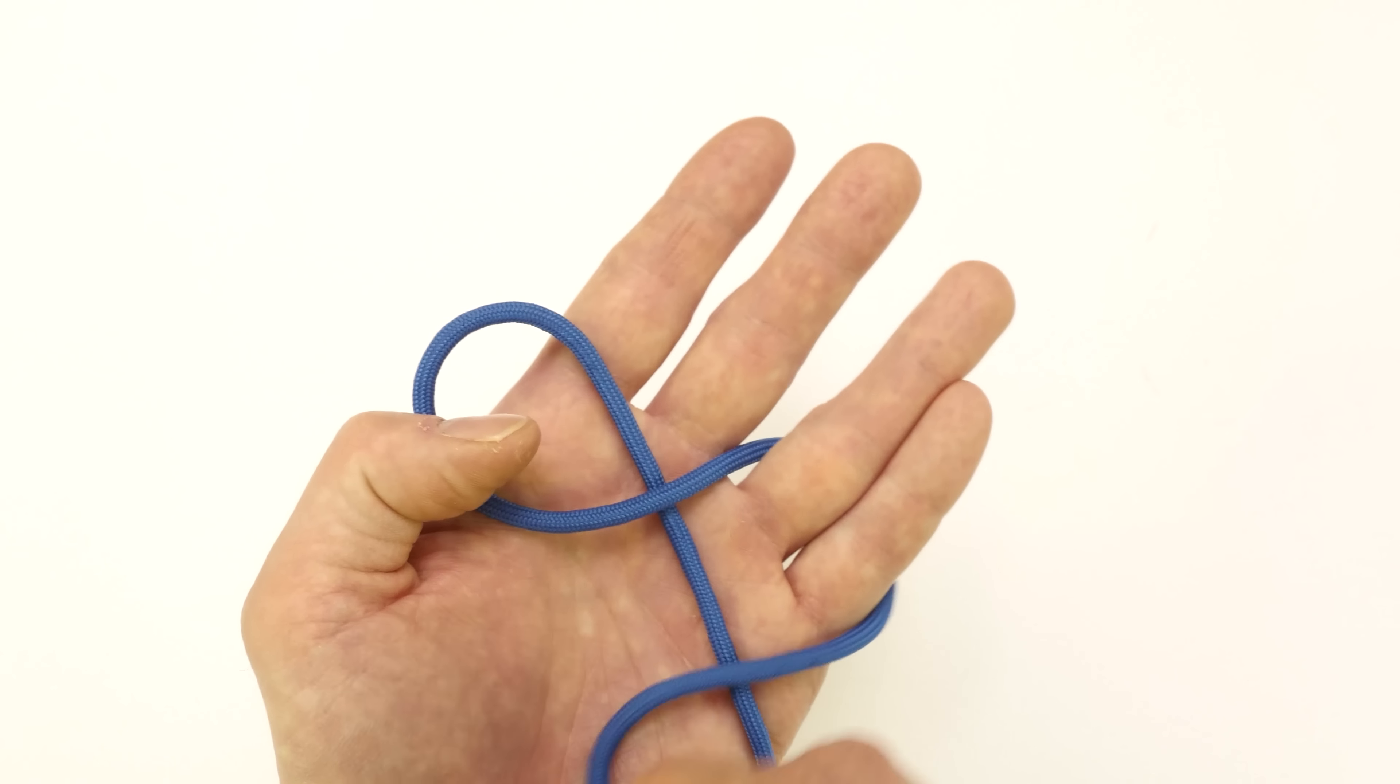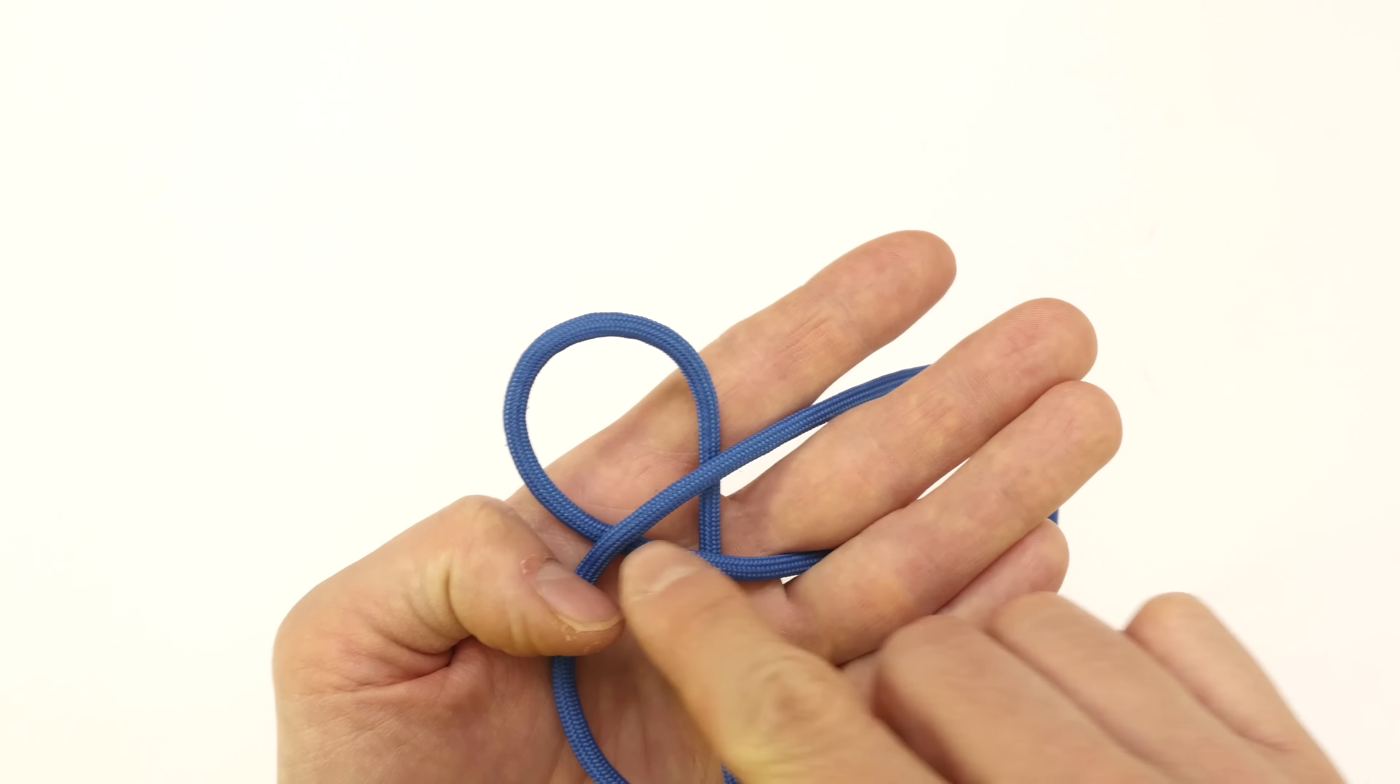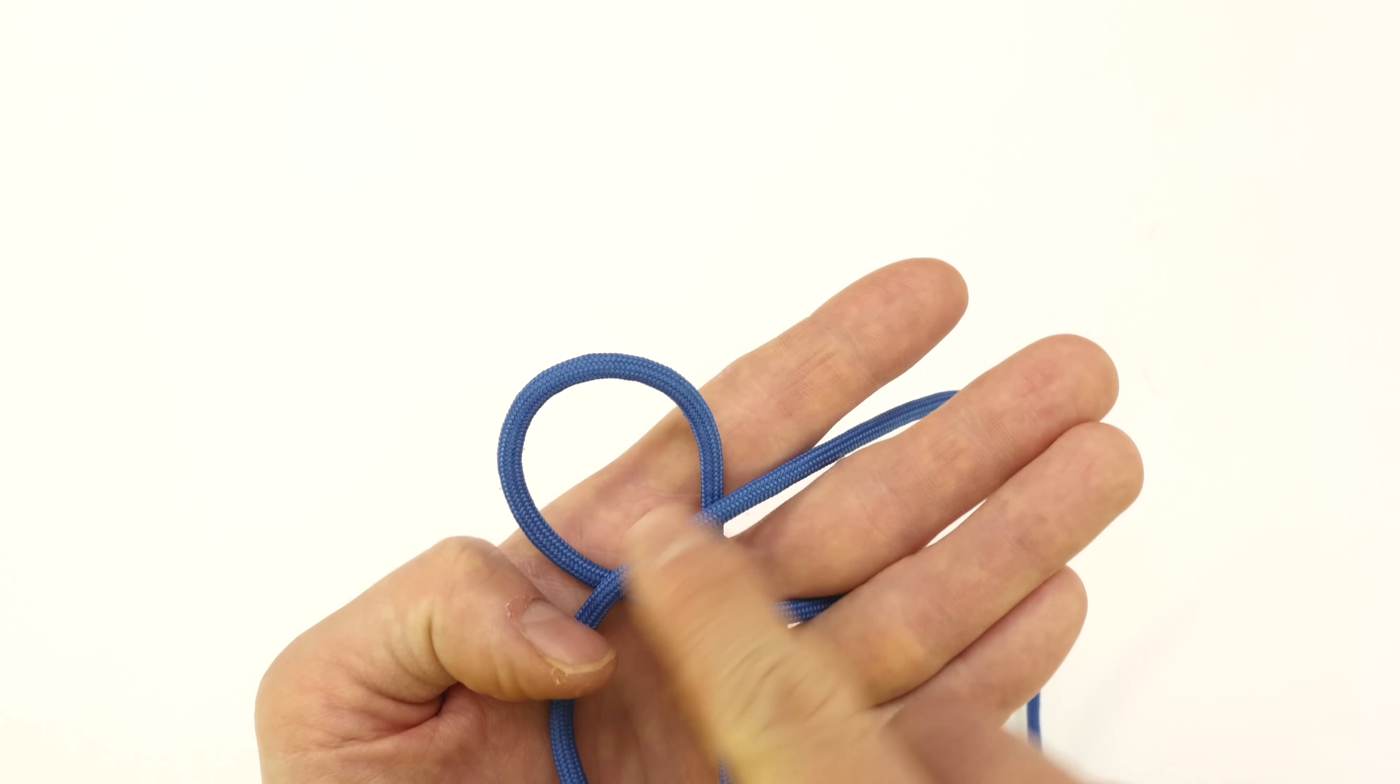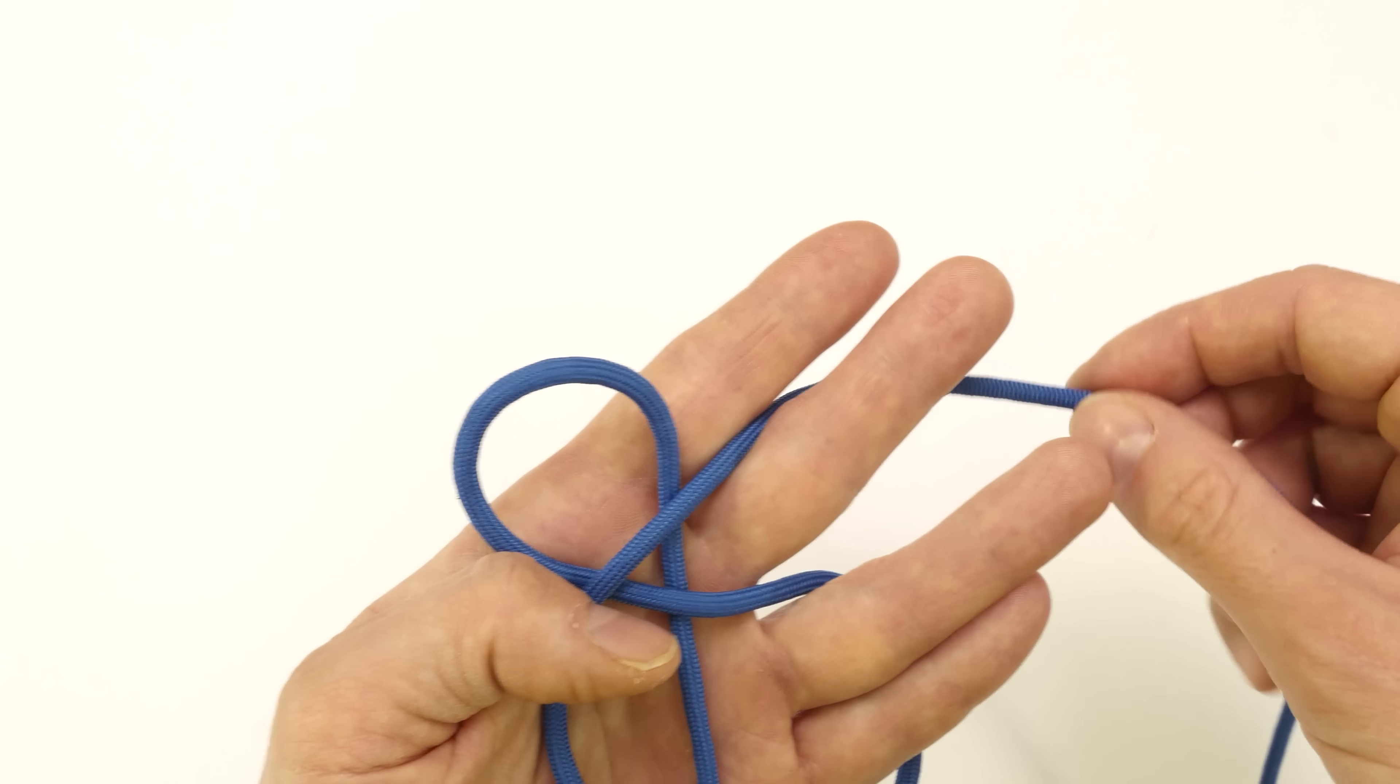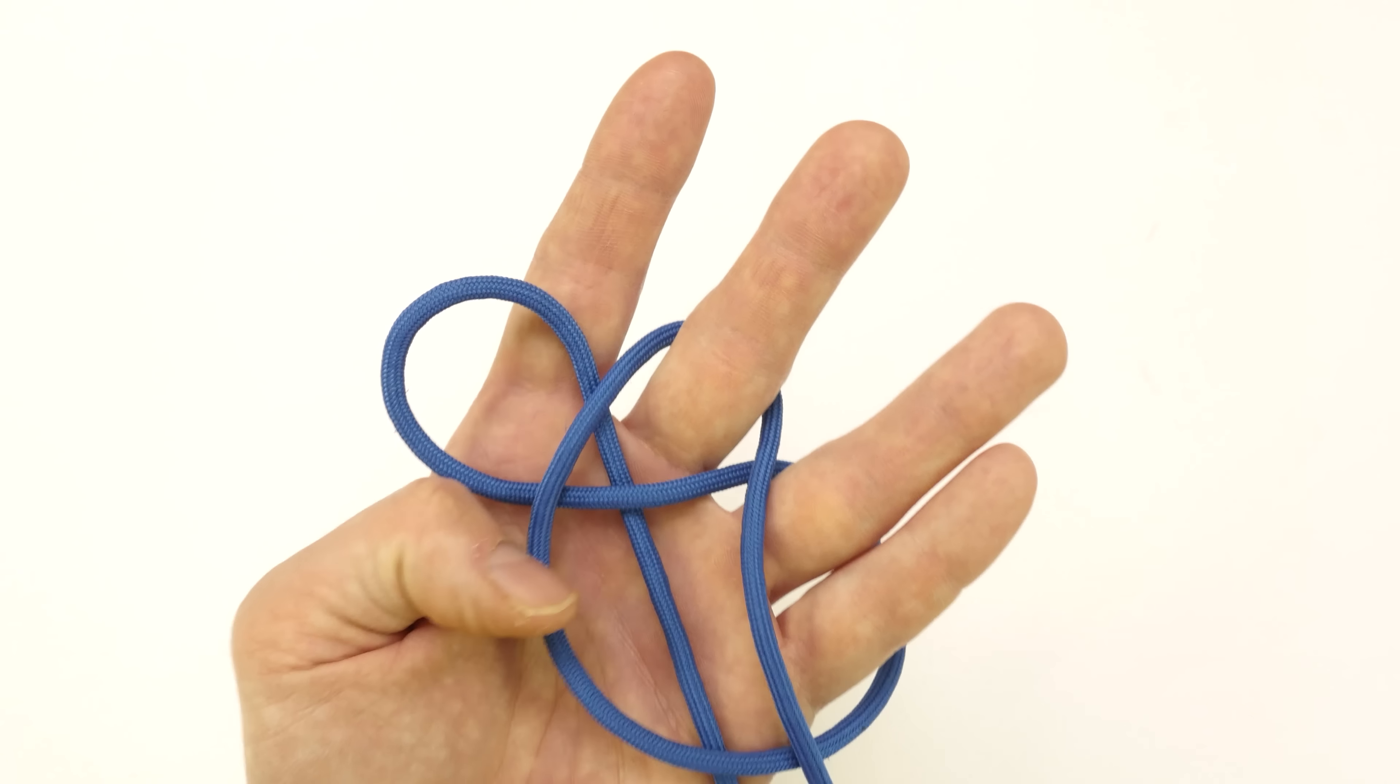Then create another loop, going over the previous loop, so over two, then come around the middle finger, and come over two, like this.